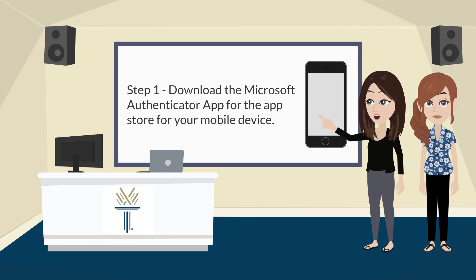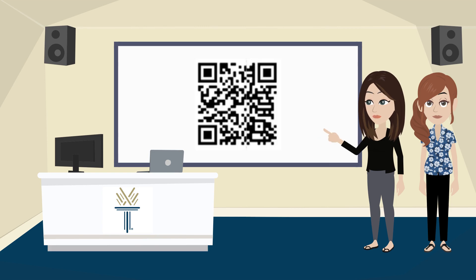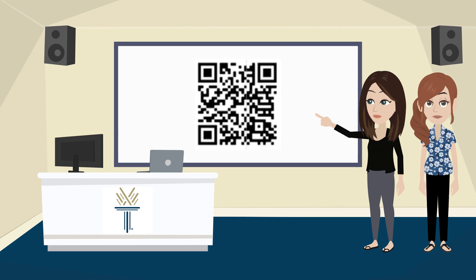Setting up your MFA is quick and easy. Step 1 is to download the Microsoft Authenticator app from the App Store for your mobile device. This QR code will take you to the Microsoft Authenticator app in your App Store. Feel free to pause the video to use this QR code and the QR codes that will follow.